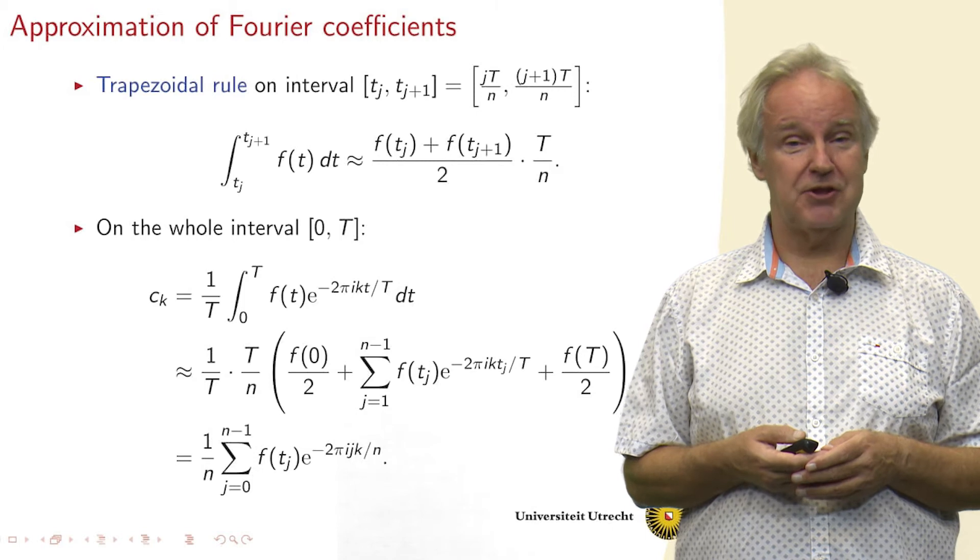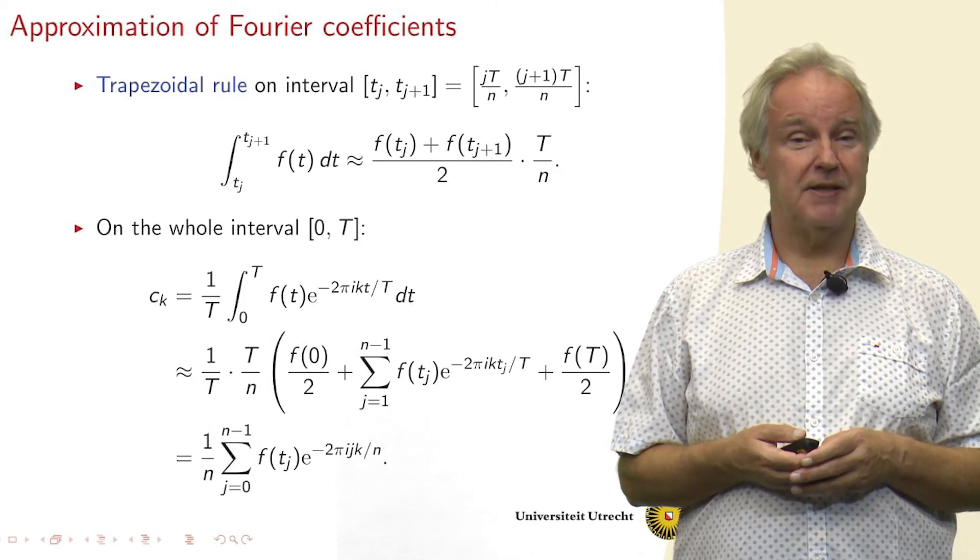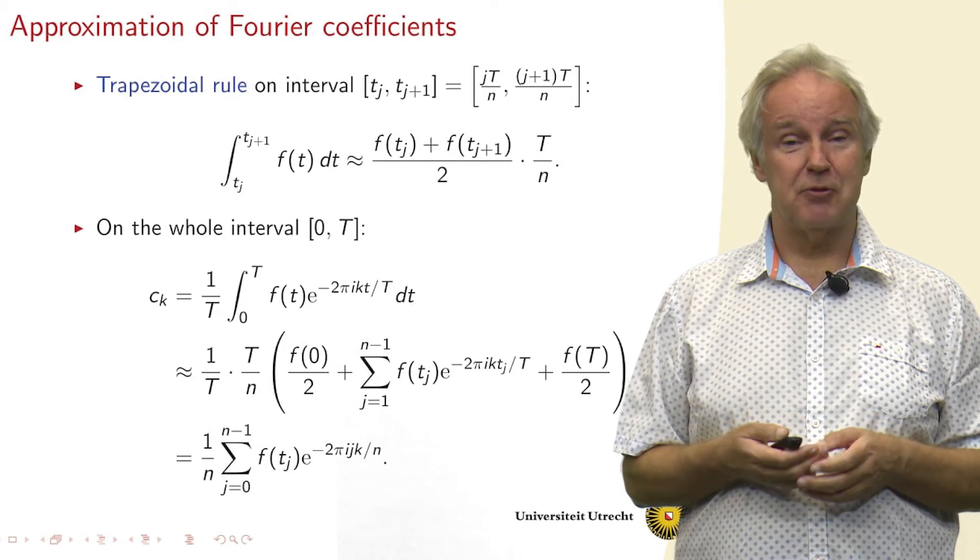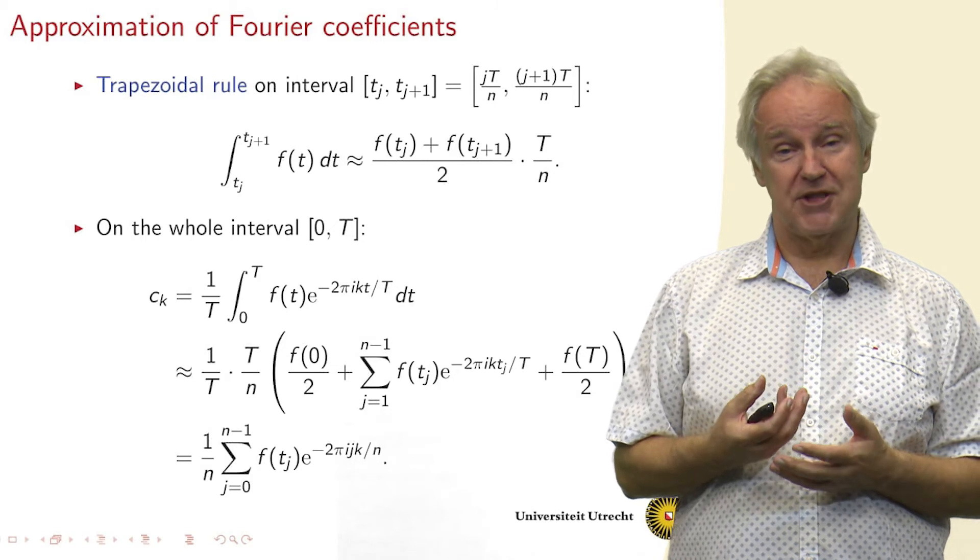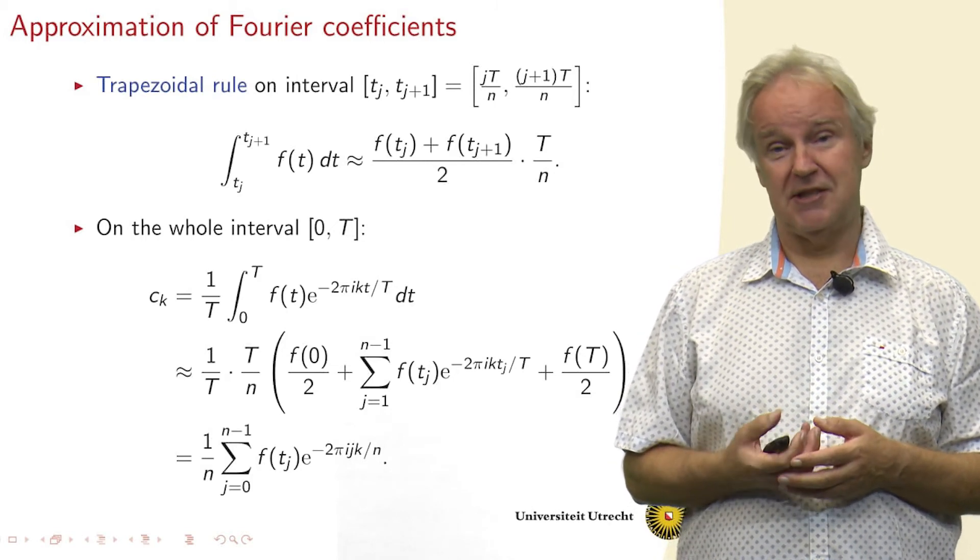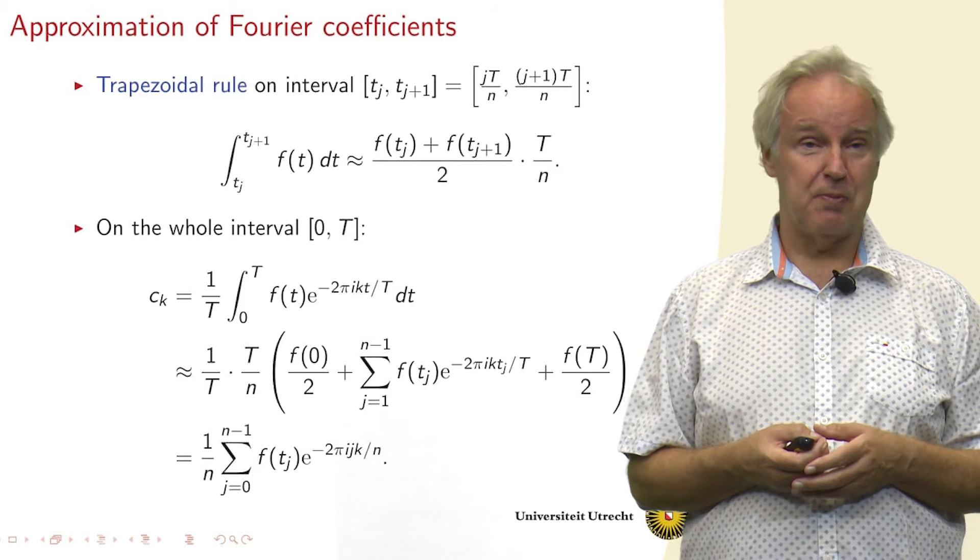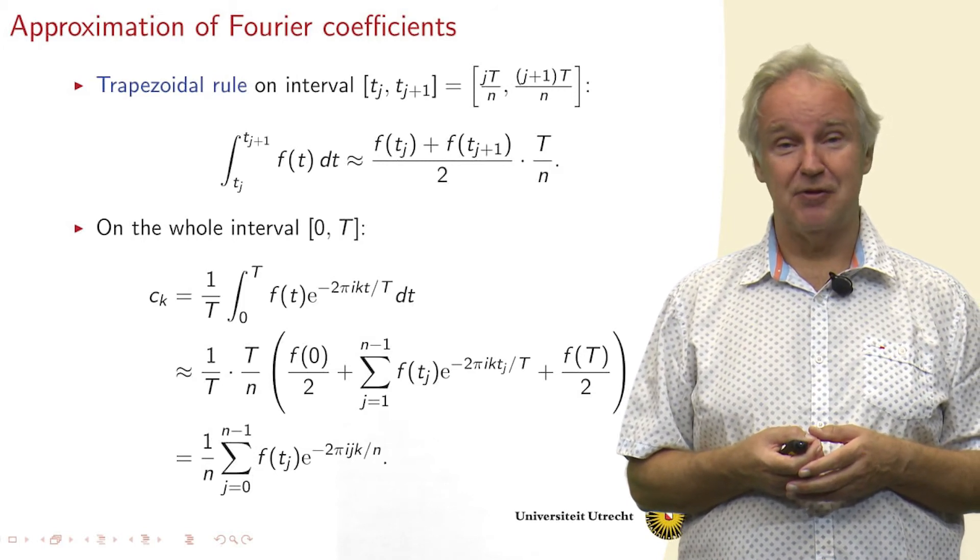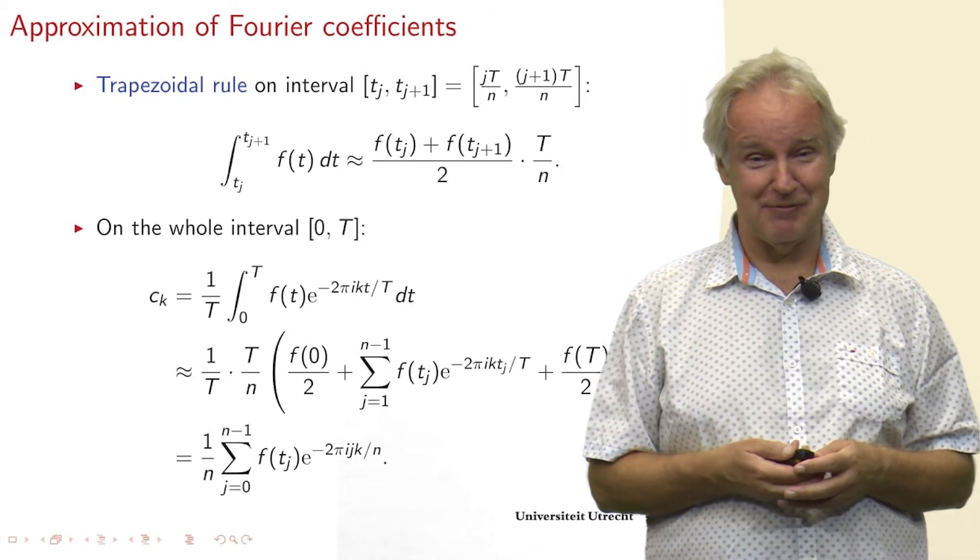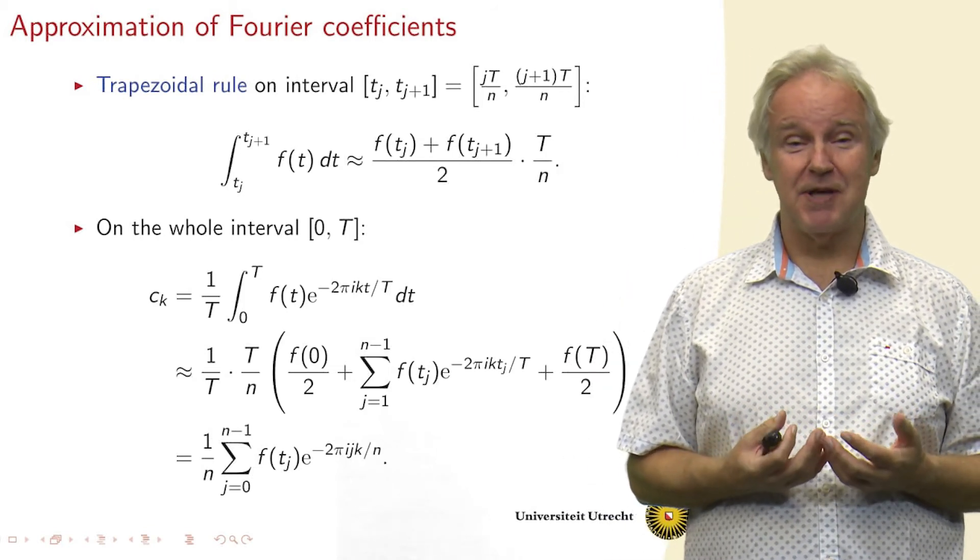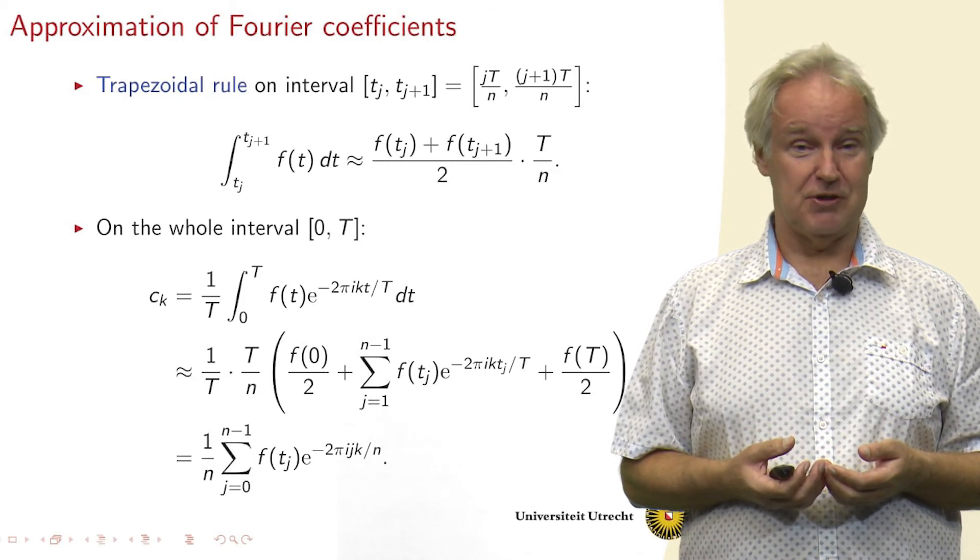And we can write it then also canceling the capital T's in front of the big expression. We get a sum of 1 over n and then the sum from j equals 0 to n minus 1 of the sampled function value f in tj times e to the power minus 2 pi ij k divided by n. And this expression is the Fourier transform of the sample points.